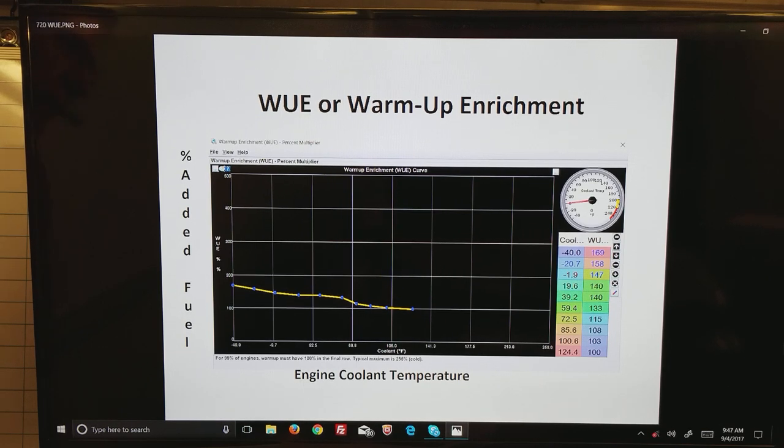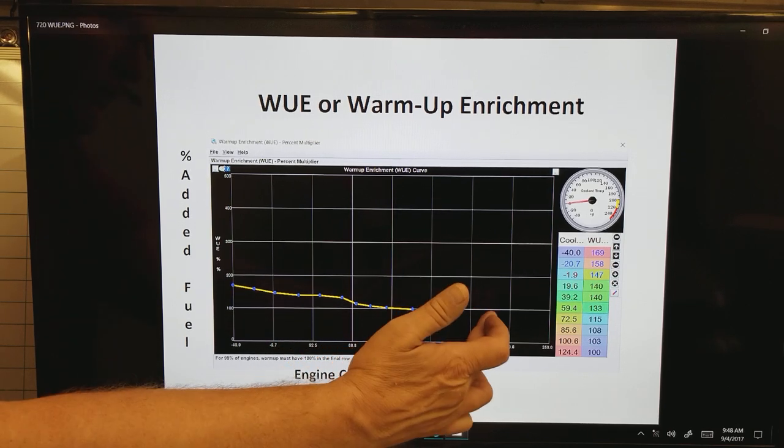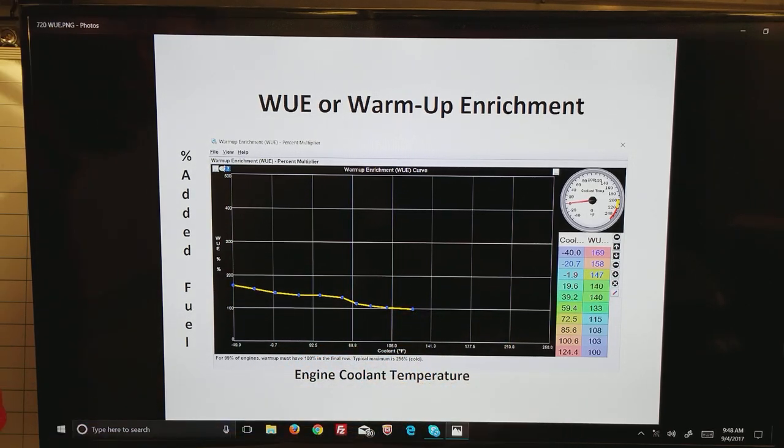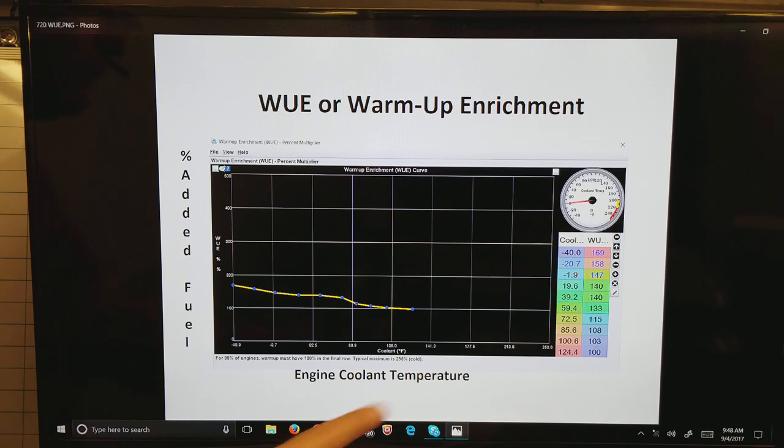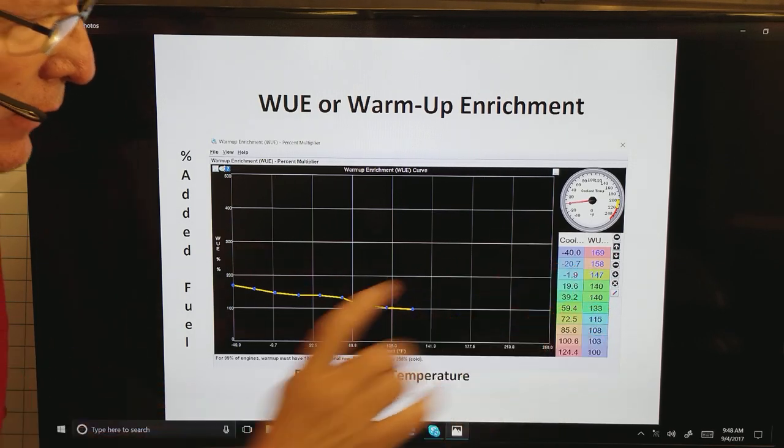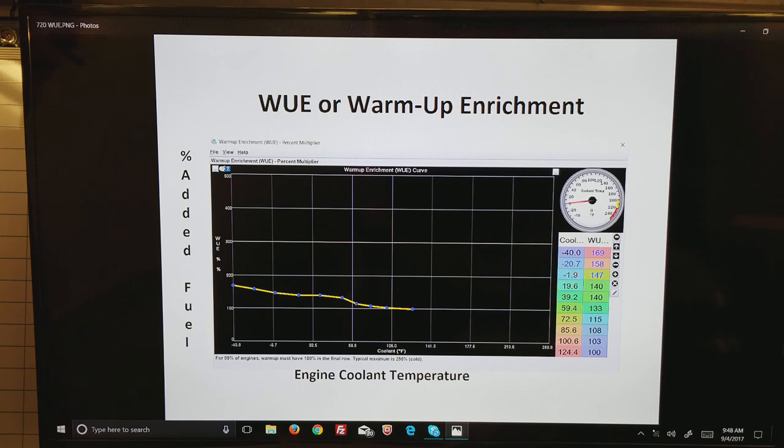Well, in EFI we really don't have those, so what we do is we have a table that basically says if we're up in my case 124 degrees or higher, we have a 100 multiplier, or multiplier of one. As we get close to zero—this happens to be in Fahrenheit—zero Fahrenheit I have a multiplier of 147, or about 50% more fuel. But that's how we handle warm-up enrichment on fuel injected motors.